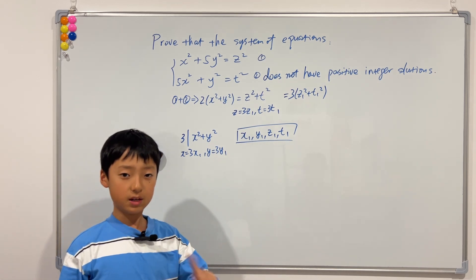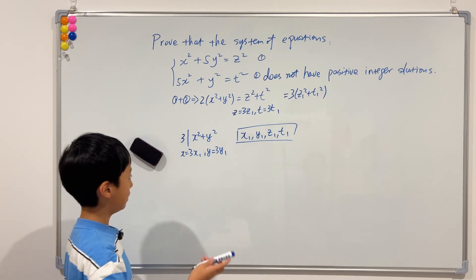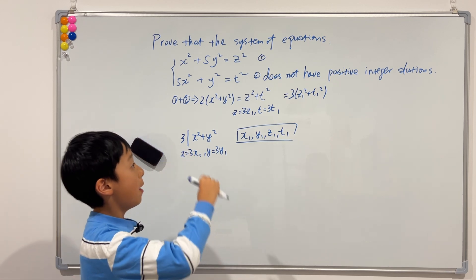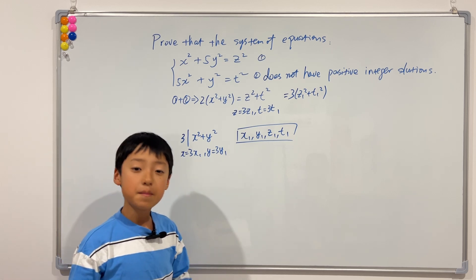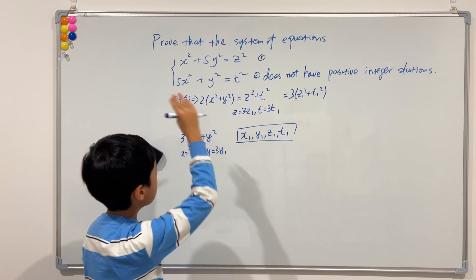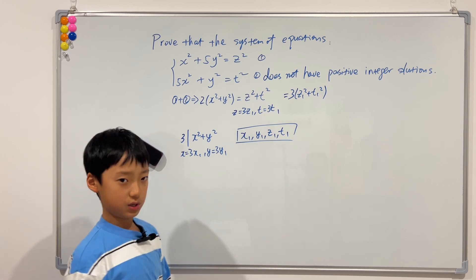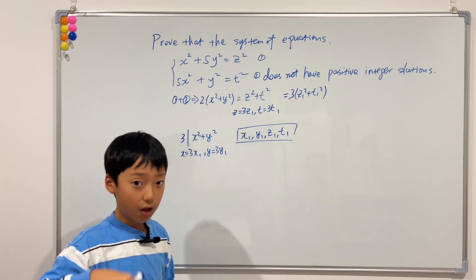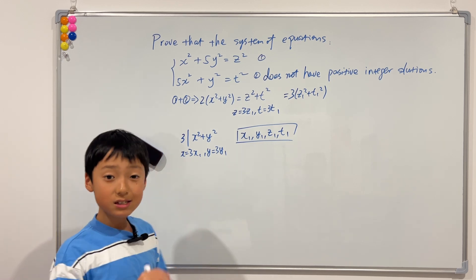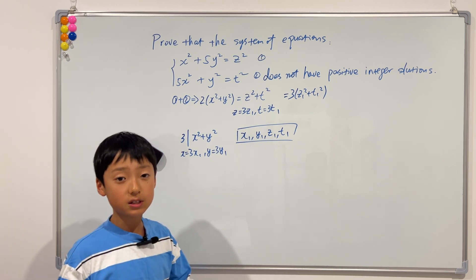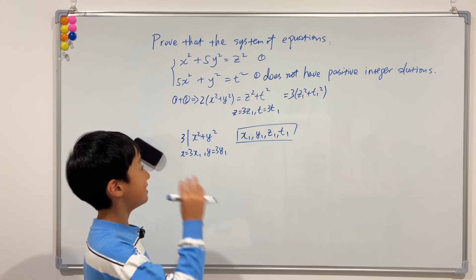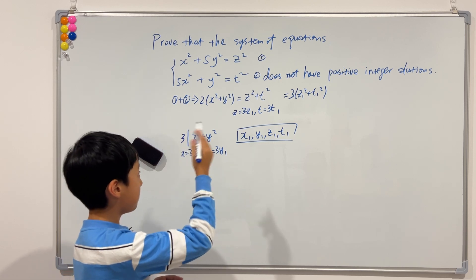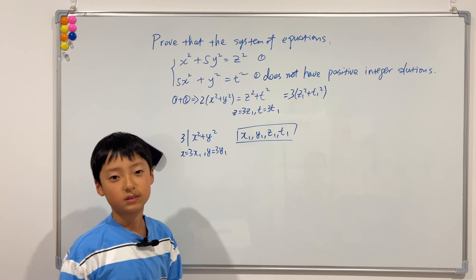Now comes the infinite descent part. This new solution is smaller than the original by a factor of three. Since the question asks about positive integer solutions, if we repeat this process infinitely, the solutions keep going down and down. But since they must be positive integers, they can't go down forever. By the method of infinite descent, we have contradicted our original assumption that the system does have positive integer solutions. Therefore, this system of equations does not have positive integer solutions.